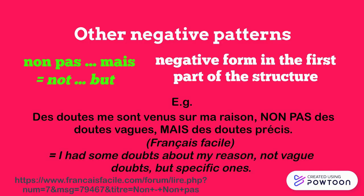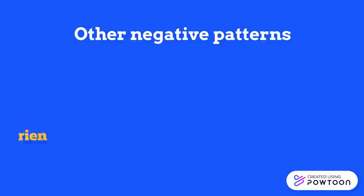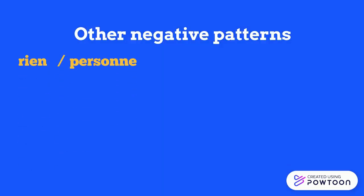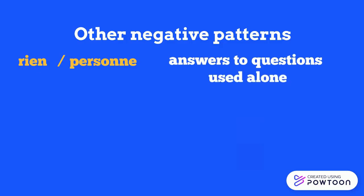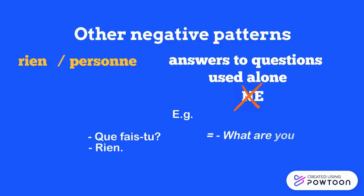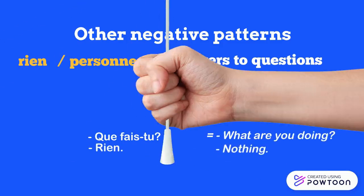Rien and personne, as answers to questions, are used alone without ne. For instance, que fais-tu ? Rien. — What are you doing? Nothing.